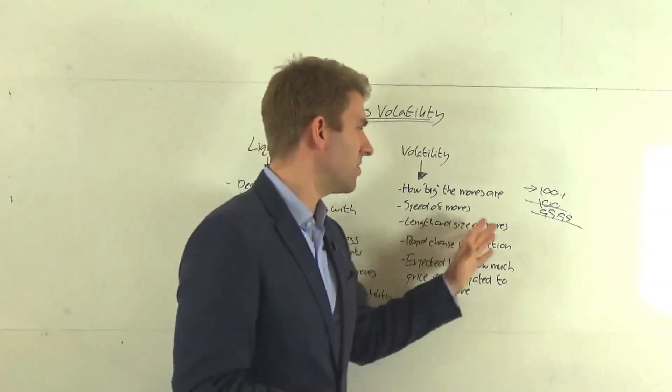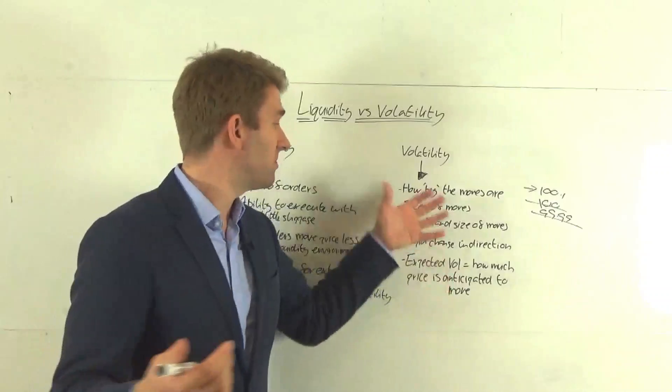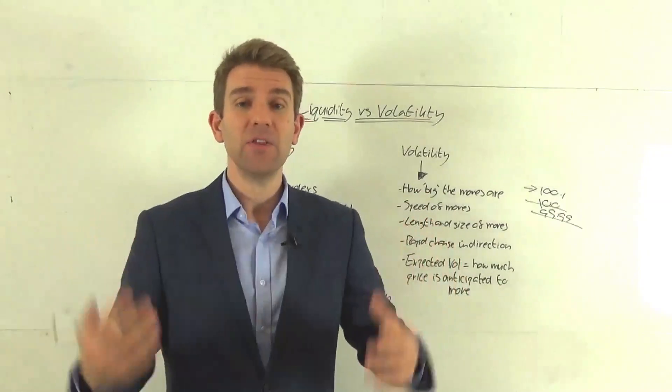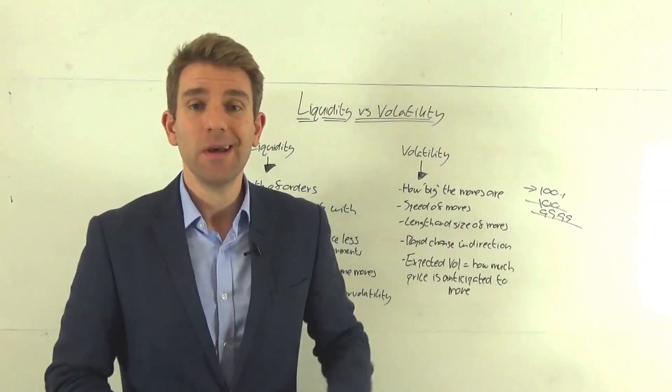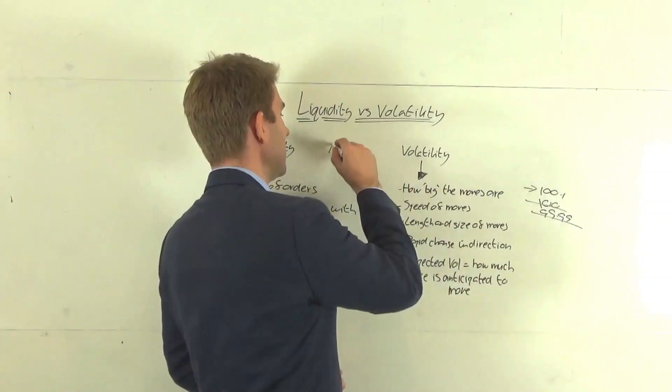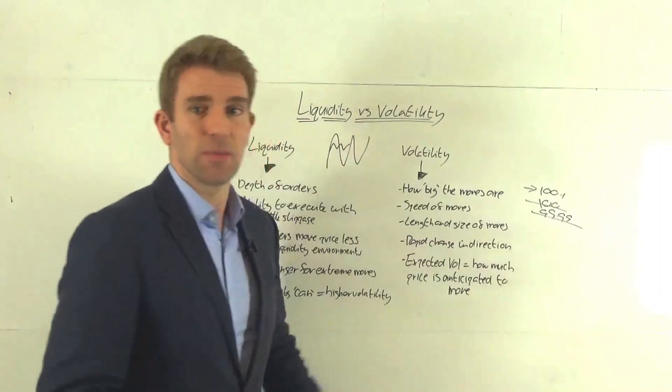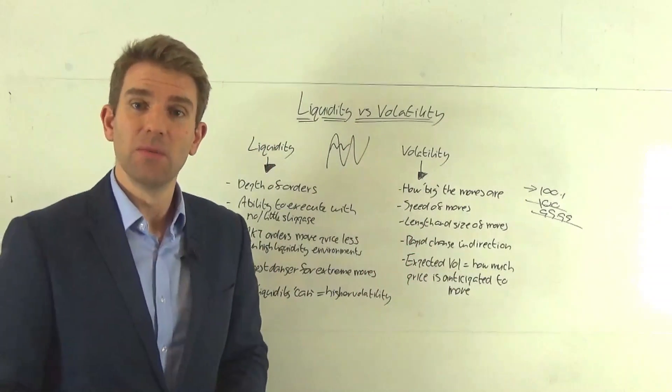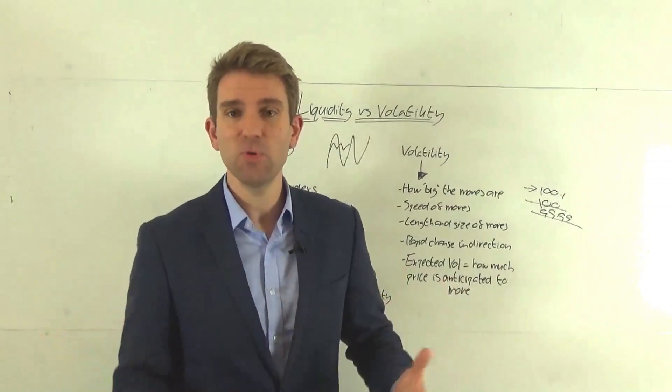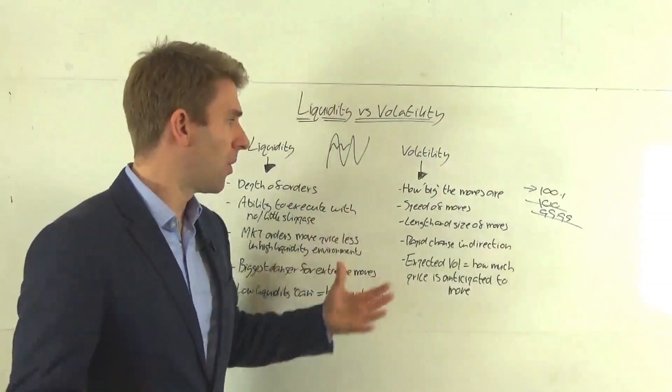So volatility in a real simplified term is how big the moves are. In other words, we've got a price that's doing this, or we've got a price that's doing that. The price that's got the bigger movement is considered more volatile in terms of percentage move, in terms of tick moves, whatever it may be, base point moves, however you're trying to measure that.